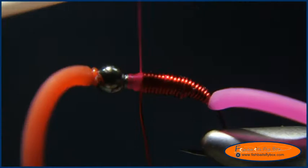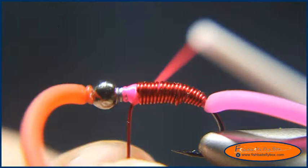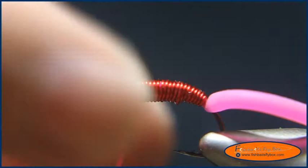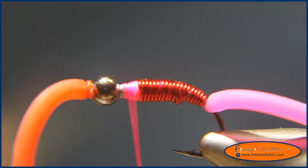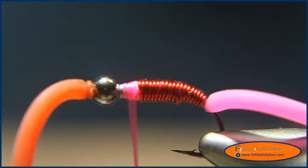Okay, I'm going to go ahead and wrap that back and I'm going to tie that copper wire off. Now I'm going to tie in some wing case material and what I'm going to use typically on a copper john use some sort of mirage tinsel or hollow tinsel or something to that effect for the top of the wing case.